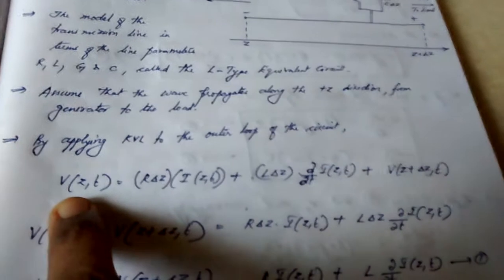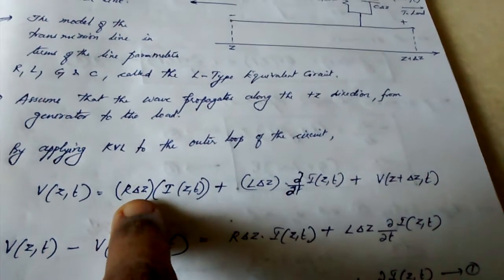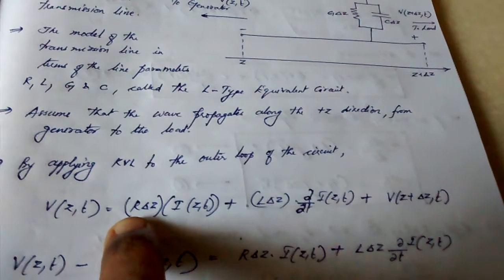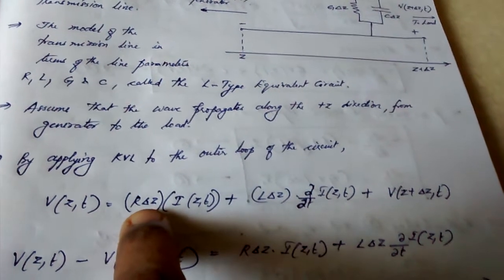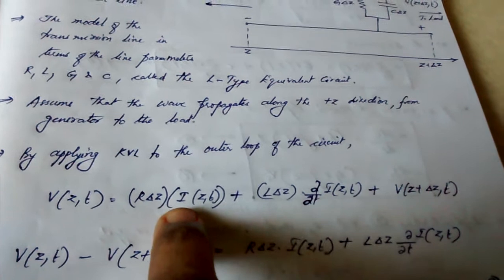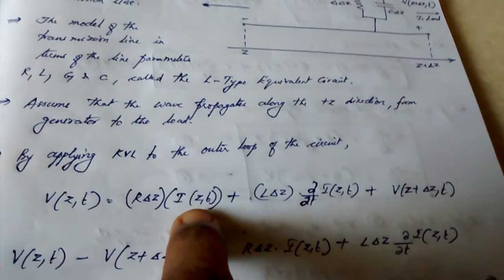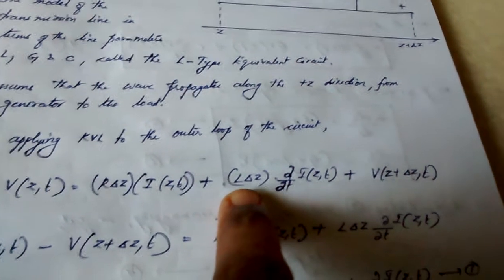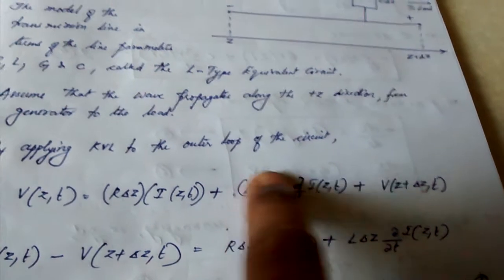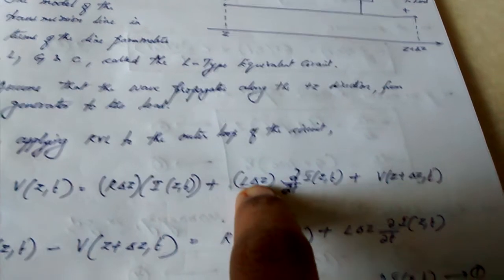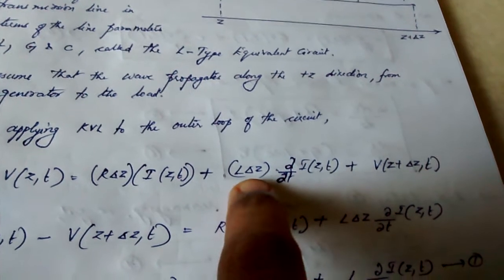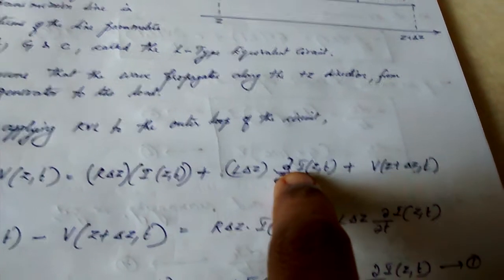So V(z, t) is equal to R·delta z — because R is the resistance per unit length — times i(z, t), plus L·delta z — that is the total inductance for the incremental distance delta z — times ∂i/∂t.